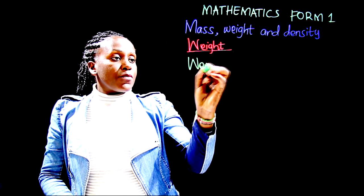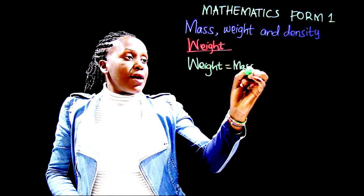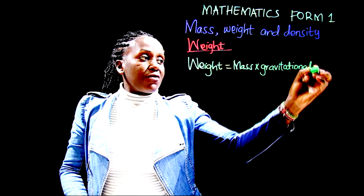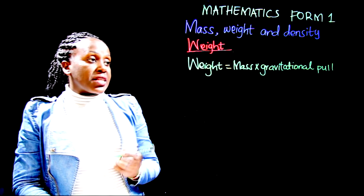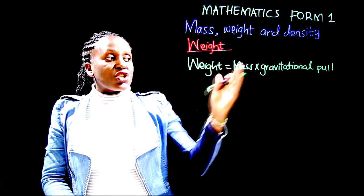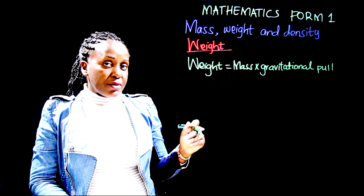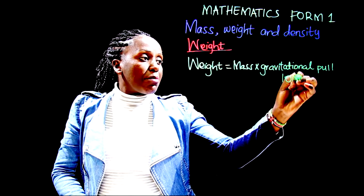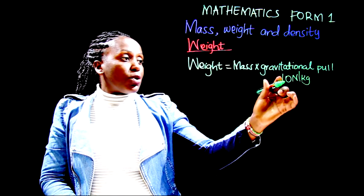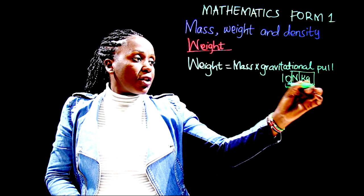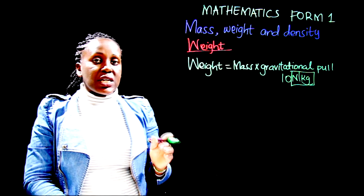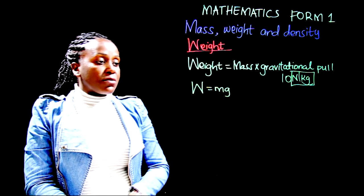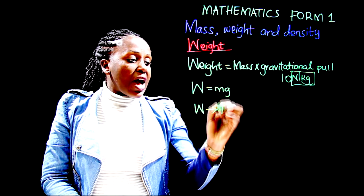Weight is equal to mass times the gravitational pull of a place or planet. For Earth, the gravitational pull is considered to be 10 newtons per kilogram. Using symbols, weight equals mass times gravitational force. The units of weight are newtons, denoted by capital N.